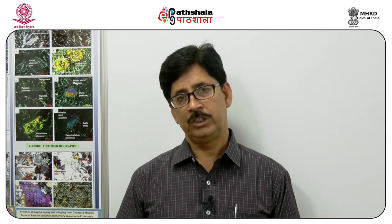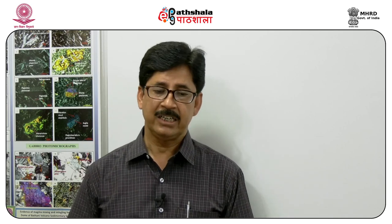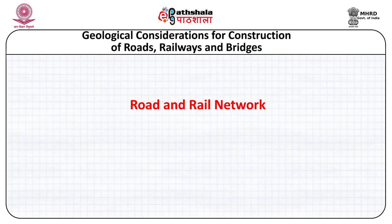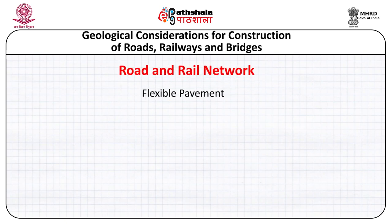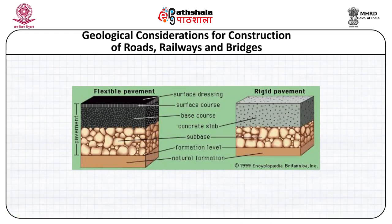For bridges, we have to have a very proper foundation after calculating the total dead and live load. In the case of roads, we have two kinds: one is called flexible pavement and another is called rigid pavement. In flexible pavement, we use tar as the binding material. In rigid pavement, we use cement concrete as the binding material.